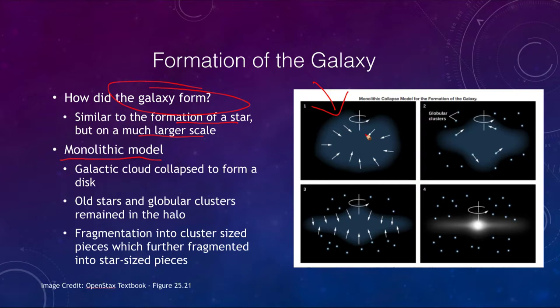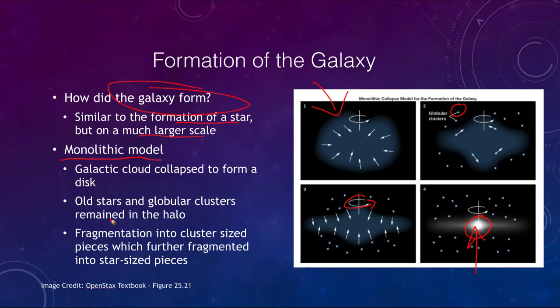In the monolithic model, the galactic cloud — as shown in figure one — is collapsing inward to form a disk. As it collapses, the very first things to form are the globular clusters. Once they form they are in orbit and remain where they are, continually orbiting around the galaxy. The collapse continues, the galaxy spins faster and faster, and material concentrates toward the center — similar to star formation on a massive scale — giving us the center of our galaxy, a high concentration of stars, our supermassive black hole, and the rest of the stars forming in the disk around it.